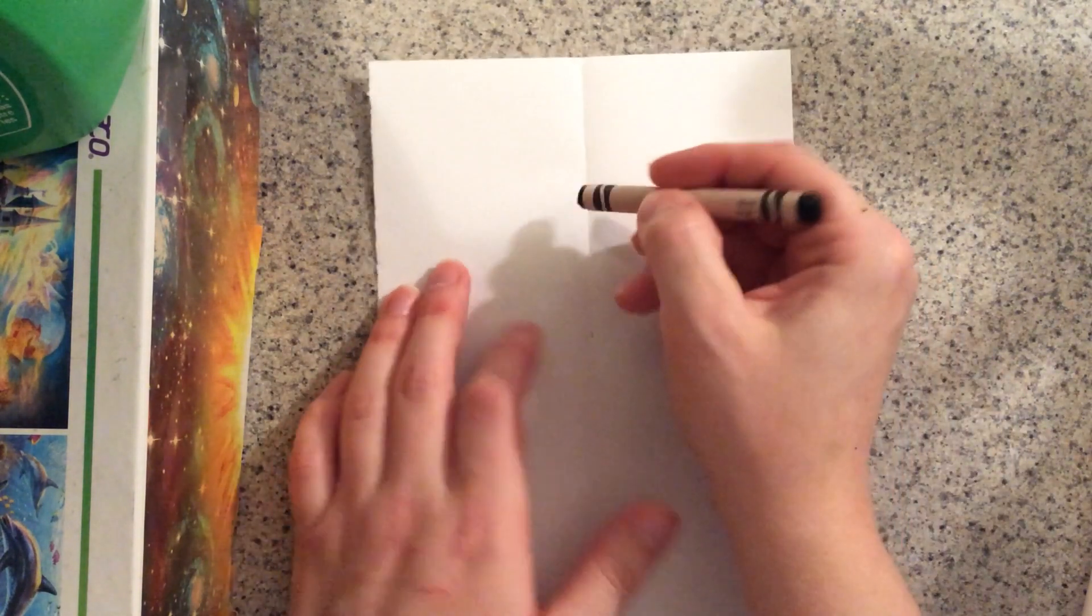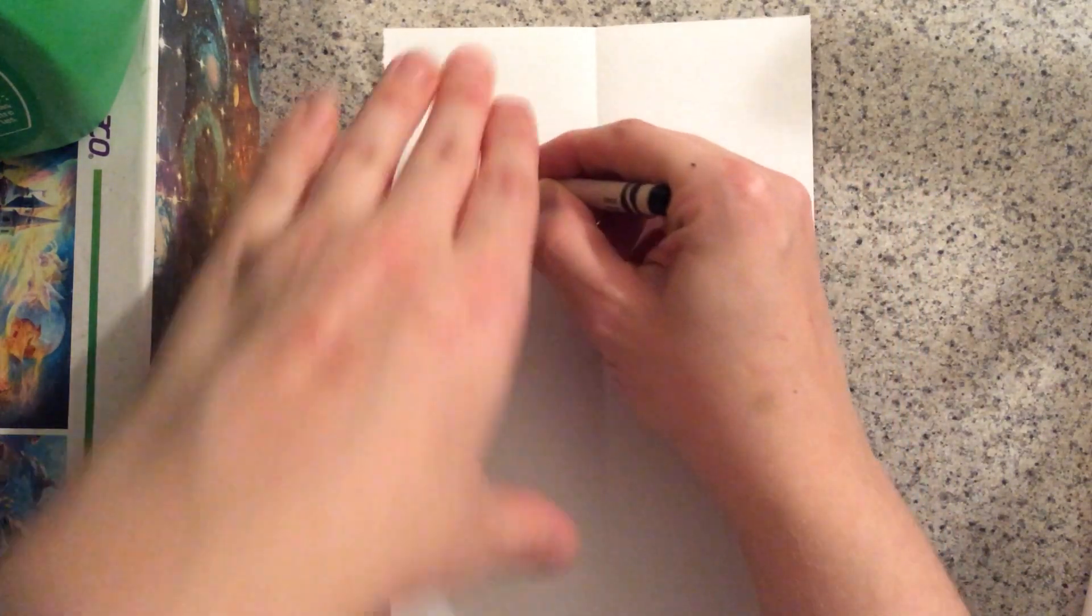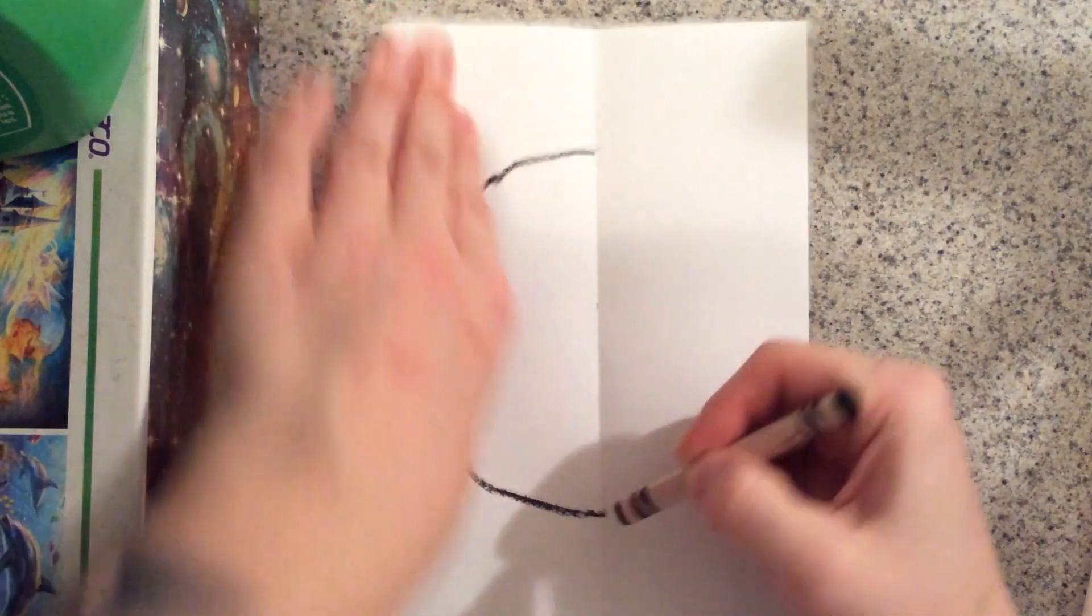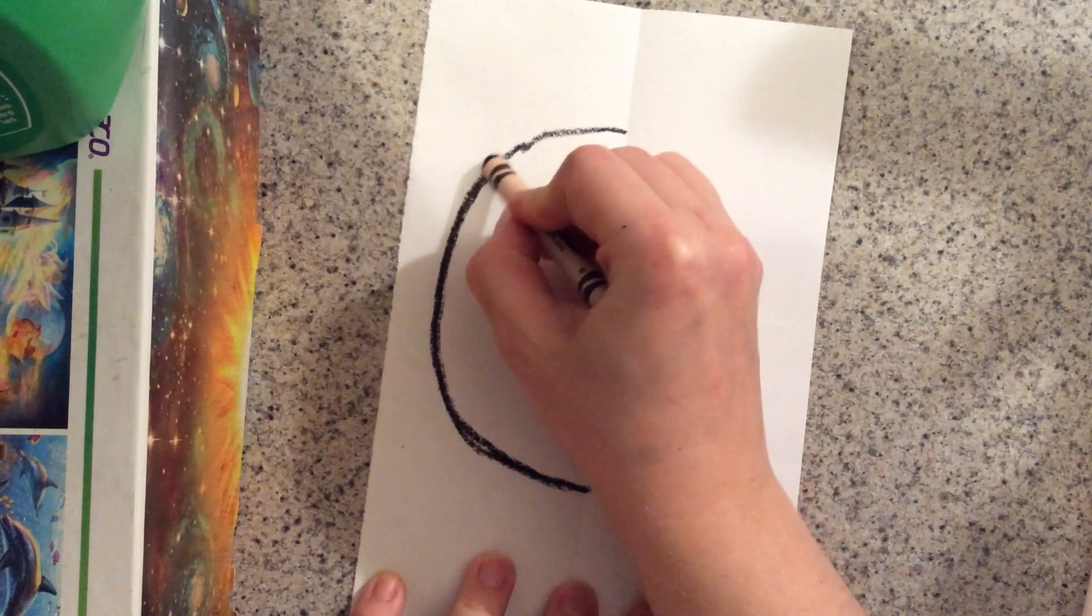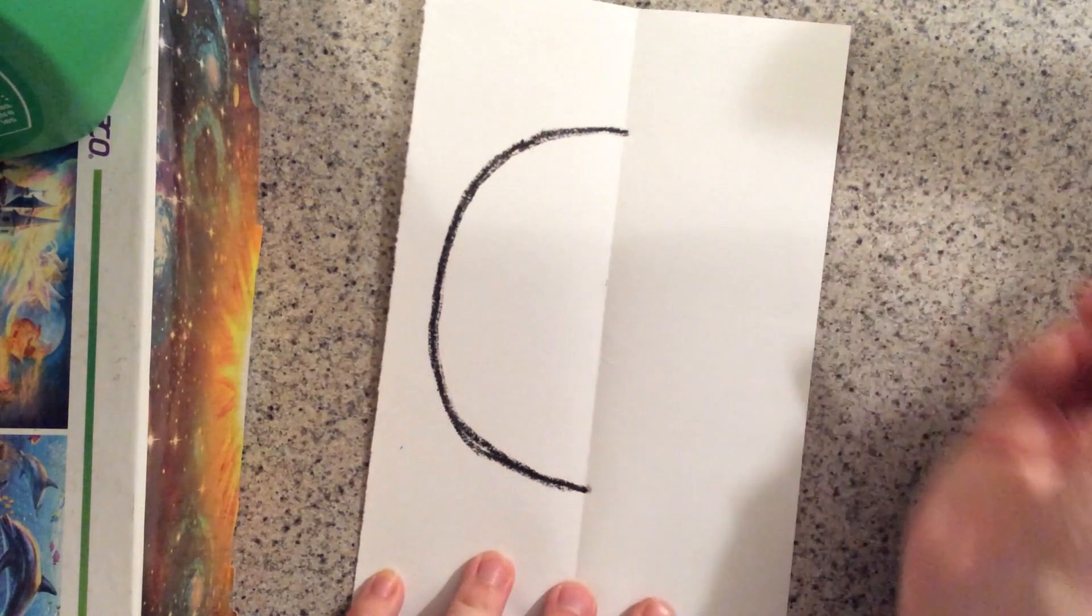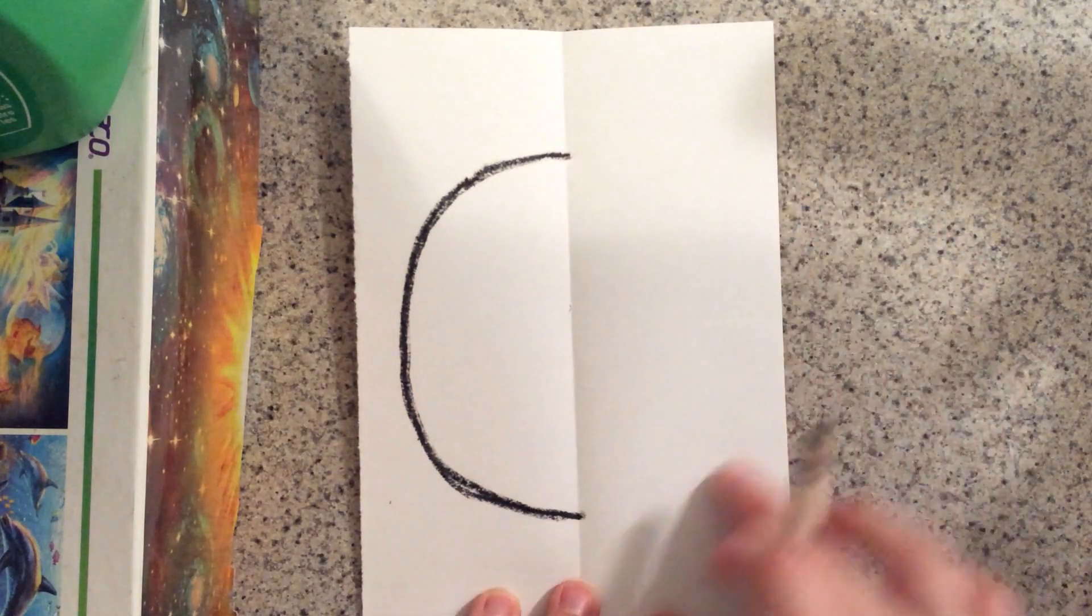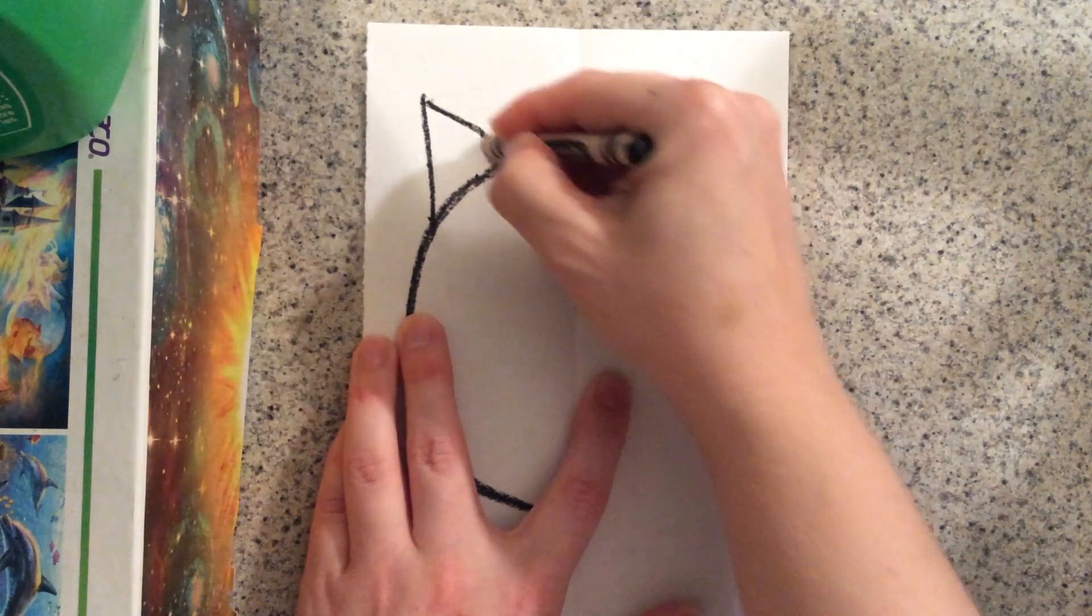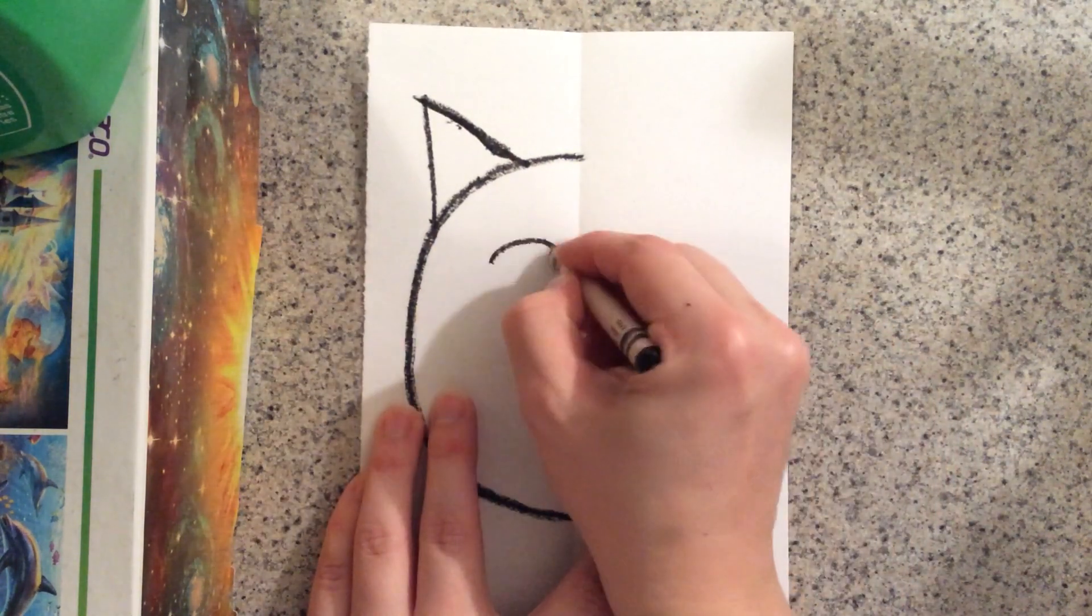So simply if I wanted to draw a cat, what I would do is I would draw half of the cat's head on this side. And nice and dark with your crayon is going to make this a lot easier for you. See how I only did half of the head? You don't want to finish it on this side. Then I'll give the cat one ear. Then one eye.